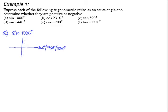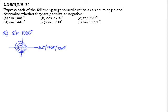For our 1000 degrees, it will go 1 round, 2 rounds, and almost 3 rounds, stopping before completing the third. Because 3 rounds is 1080 degrees, and 1000 is 80 degrees less than 1080.